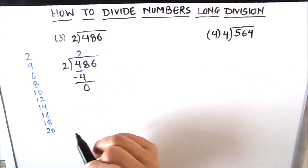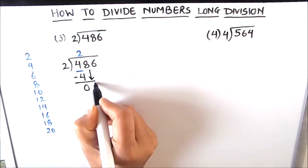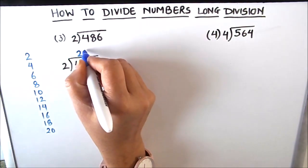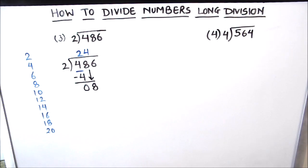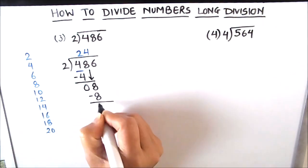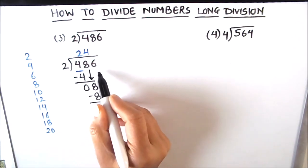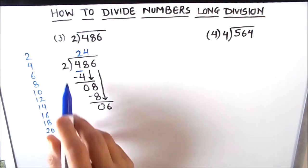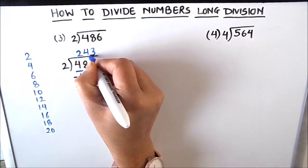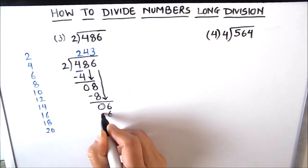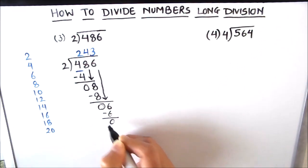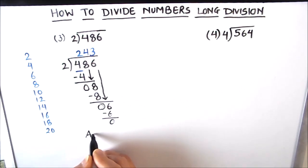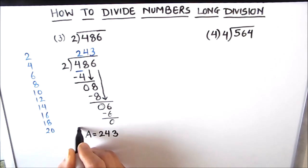We have more digits to divide, so we drop down the next digit which is 8. We divide 8 by 2: 2×4=8. We write 4 in the quotient and 8 just below 8, then subtract: 8 minus 8 is 0. We have one more digit to divide, so we bring down the next digit which is 6. Dividing 6 by 2: 2×3=6. We write 3 in the quotient and 6 below 6, subtract: 6 minus 6 is 0. We are done with all the digits. Our remainder is 0 and our quotient is 243, which is our final answer.